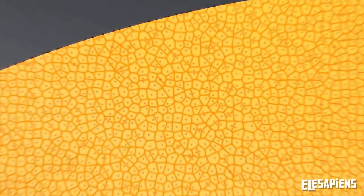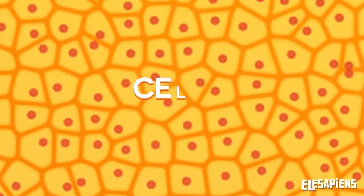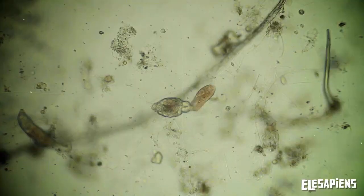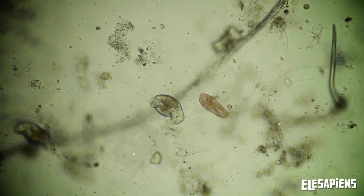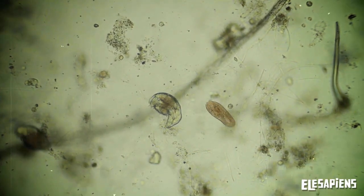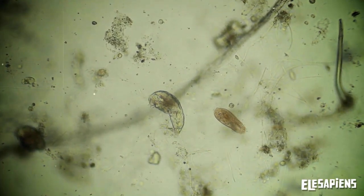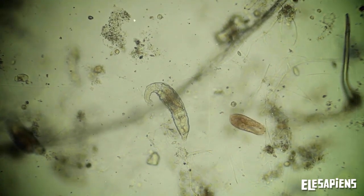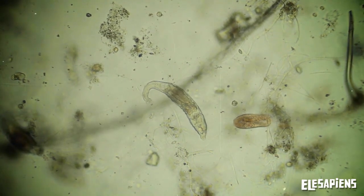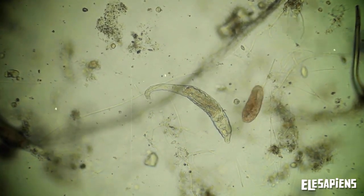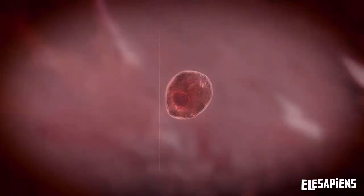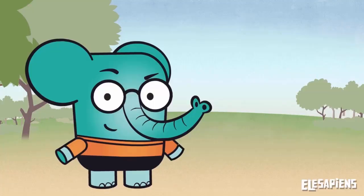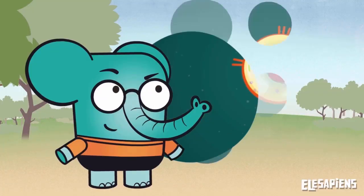All living beings are made of cells. A cell is the smallest unit of life within an organism. This means that it performs the basic functions of all living beings: feeding, socializing, and reproduction. It's like a tiny creature.